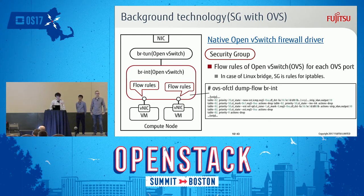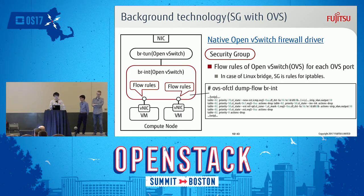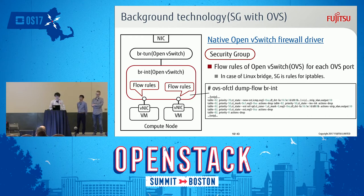Open vSwitch is the default configuration, called the native Open vSwitch firewall driver. The security group is implemented as flow rules of Open vSwitch for each OVS port. In that infrastructure environment, you can confirm this with the following command: ovs-ofctl dump-flows, or something similar. You can confirm the OVS flows — that is the security group.